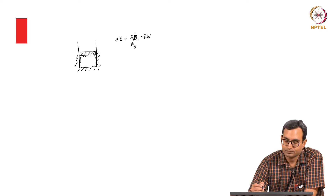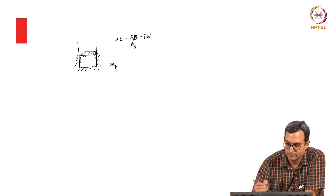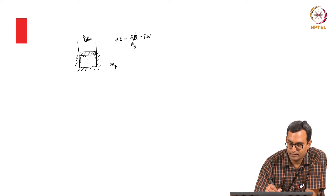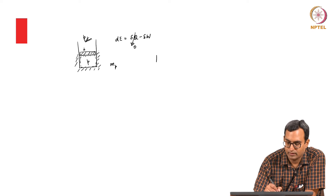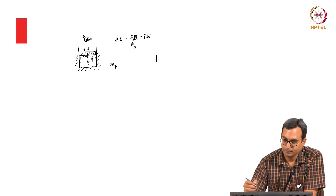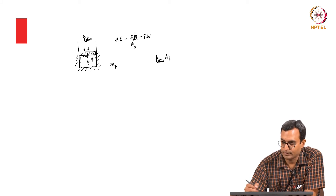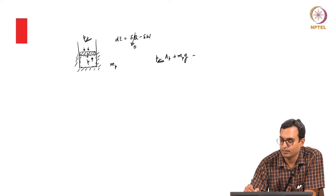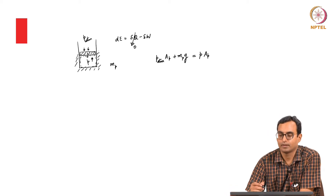But the question is: will this do any work? If this is initially at equilibrium, the piston has a mass m_p. The pressure outside is atmospheric, the pressure inside is p. For equilibrium, p_atmosphere acting downwards times the area plus the weight of the piston acting downwards must equal the pressure inside times the area acting upwards. This must be true at all times if it is in equilibrium.